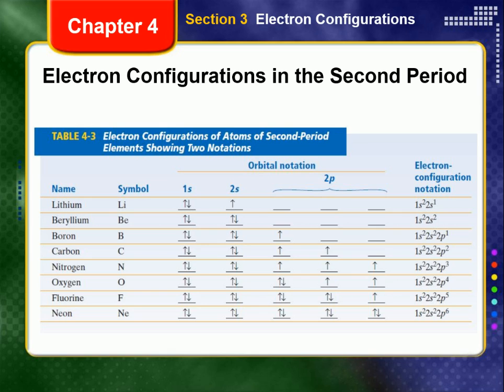Two 2p orbitals are filled in fluorine, F, and all three are filled in neon, Ne. Atoms such as those of neon, which have the s and p sublevels of the highest occupied level filled with 8 electrons, are said to have an octet of electrons. Notice that neon is the last element in the second period.